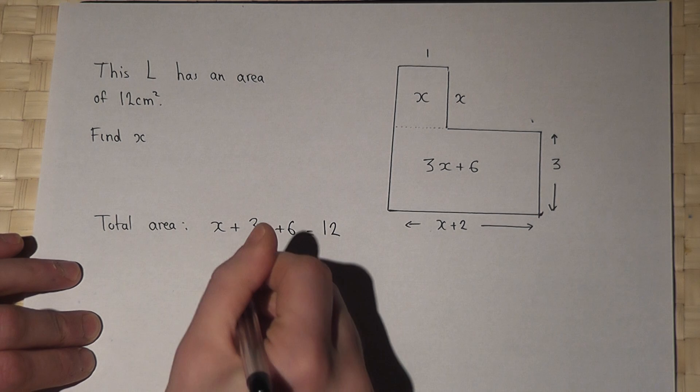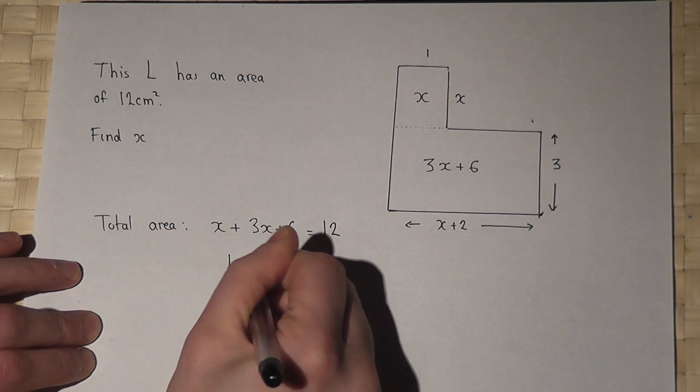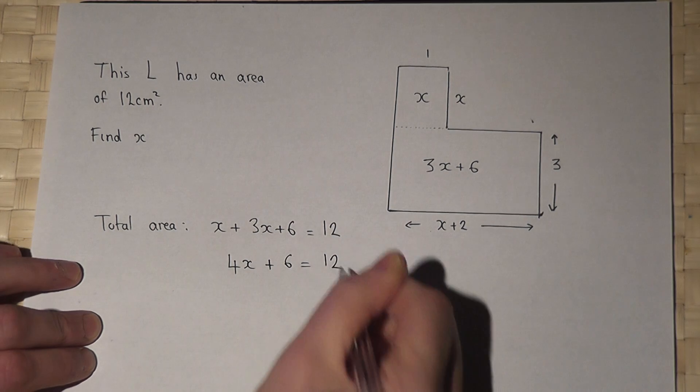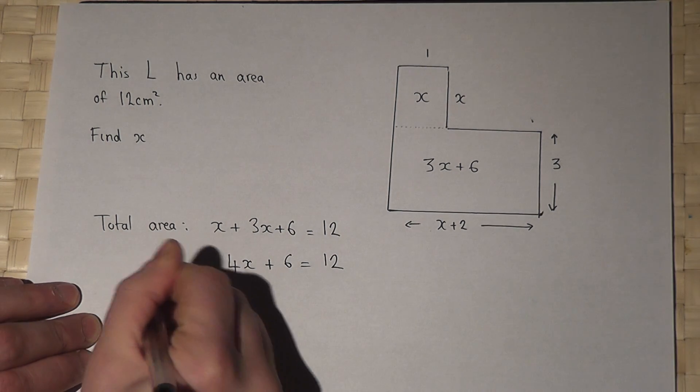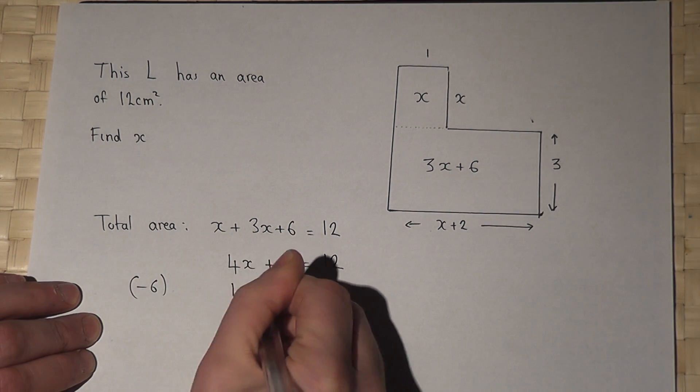Well x plus 3x is 4x, so 4x plus 6 equals 12. If we take 6 from both sides, 4x equals 6.